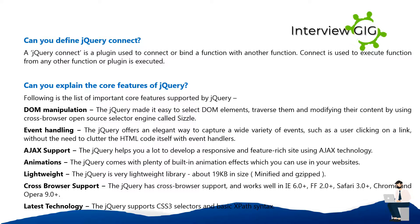What are the core features of jQuery? DOM manipulation — jQuery makes it easy to select DOM elements, traverse them, and modify their content using a cross-browser open-source selector engine called Sizzle. Event handling — jQuery offers an elegant way to capture a wide variety of events, such as a user clicking on a link, without cluttering the HTML code with event handlers.